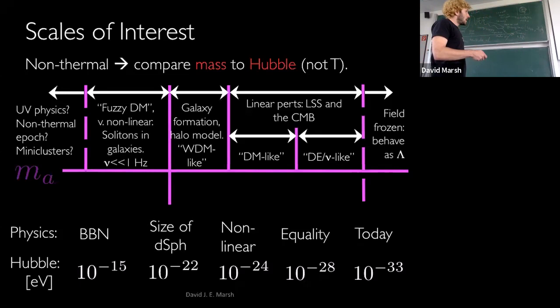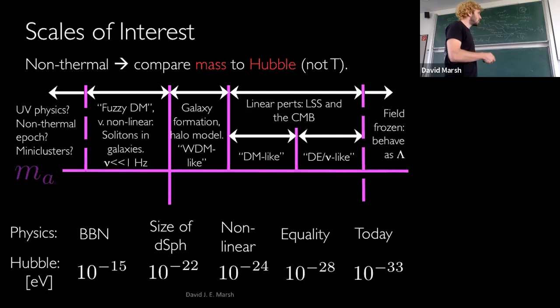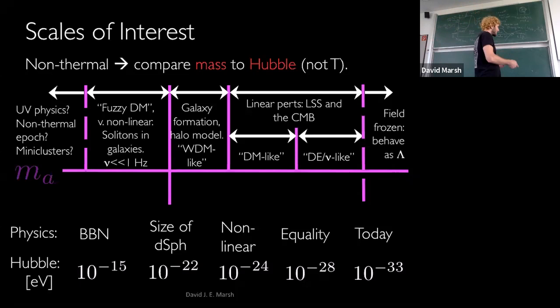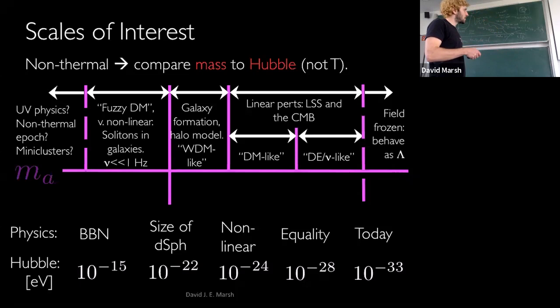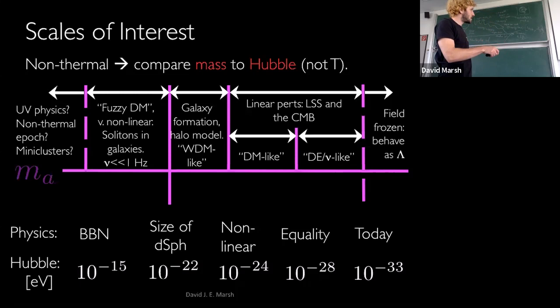Everything between 10^{-24} to 10^{-15} eV we have to work much harder to constrain. This has been the focus of Jens's lectures, and I'll also talk about all the way down to about 10^{-10} eV in the next lecture. These axions affect non-linear structure, galaxy formation; we need to use the halo model, somewhat warm-dark-matter-like. For direct detection, they're particularly challenging in the fuzzy dark matter regime between 10^{-22} to 10^{-15} eV, because 10^{-15} eV is about a hertz in frequency. These fields have natural frequency between a hertz and about 10^{-7} Hz — very hard for direct detection, which we'll address in lecture 10.